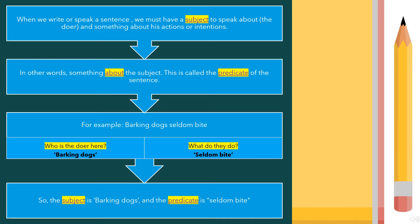For example, barking dogs seldom bite. Who is the doer here? Barking dogs. What do they do? Seldom bite. So, the subject is barking dogs and the predicate is seldom bite.